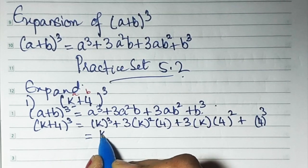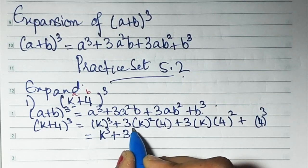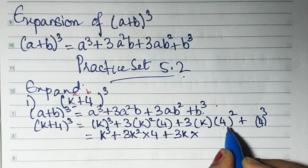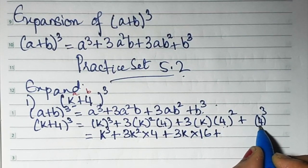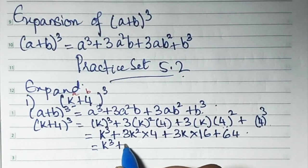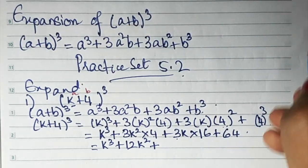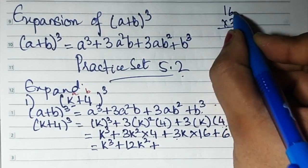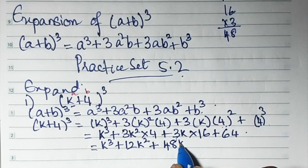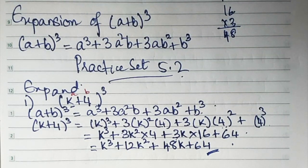Now solve. k³ plus 3 × 4 = 12, so 12k². Then 3k × 4² = 3k × 16 = 48k. And 4³: 4 × 4 = 16, 16 × 4 = 64. So the answer is k³ + 12k² + 48k + 64.